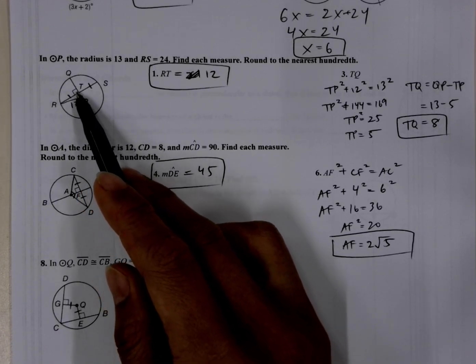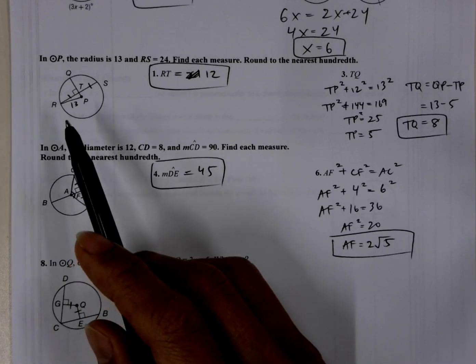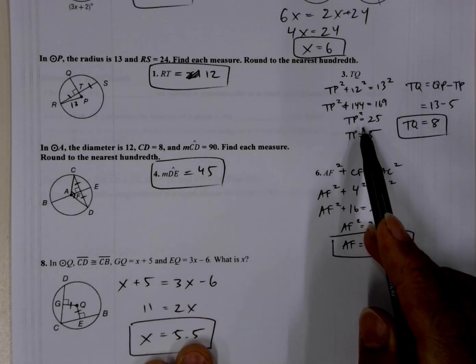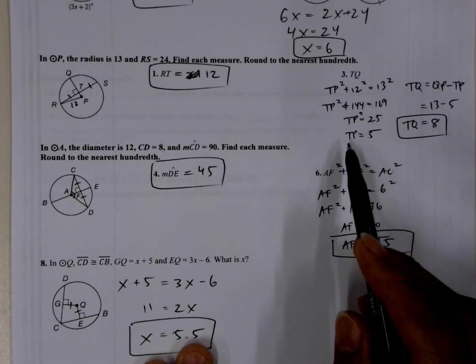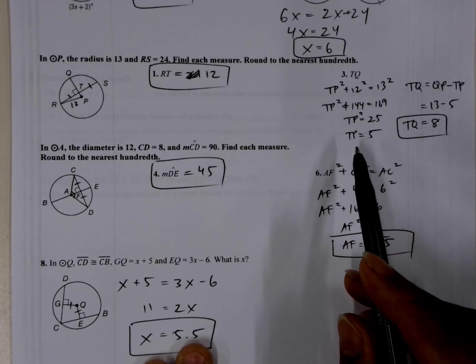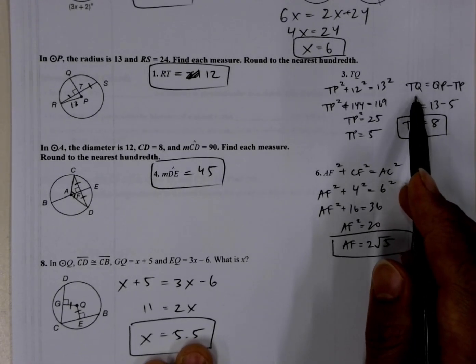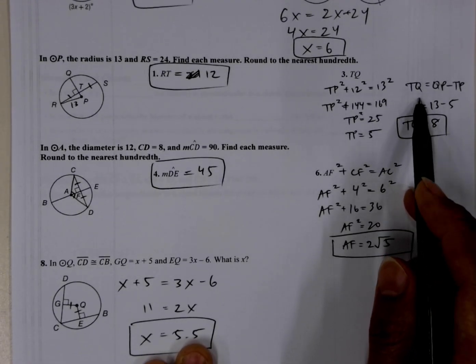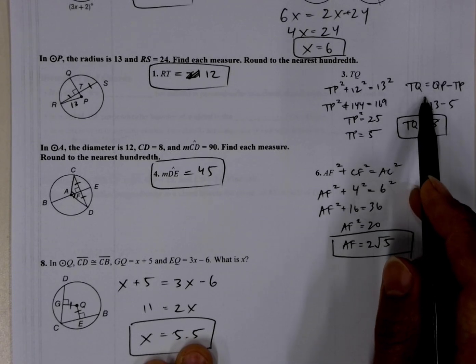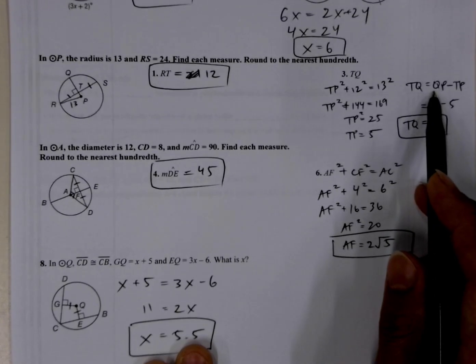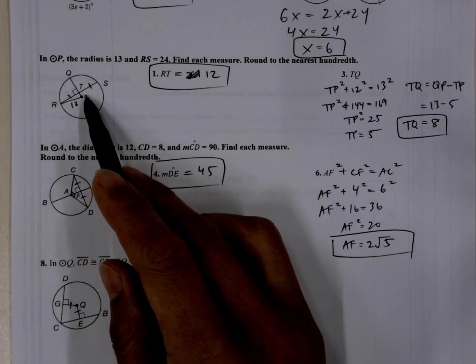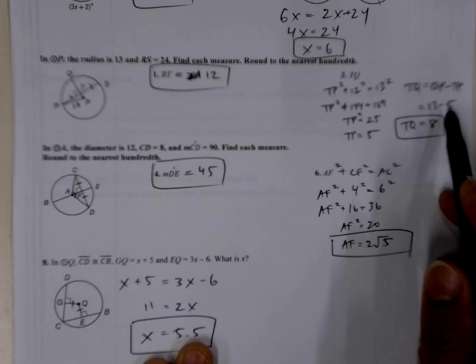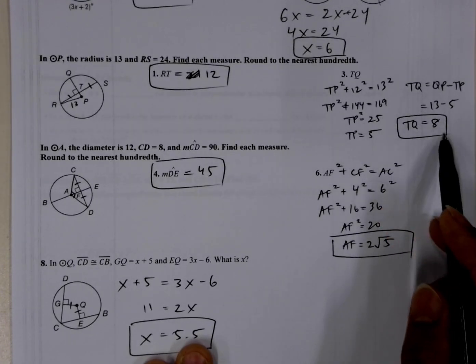So we can find TP by Pythagorean theorem. So I found TP using Pythagorean theorem, which is leg squared plus leg squared is equal to hypotenuse squared. And then we go ahead and plug it into this equation here, which is TQ is equal to QP, the radius, minus TP. So this entire radius minus TP is equal to QT or TQ, and we find that it's 8.